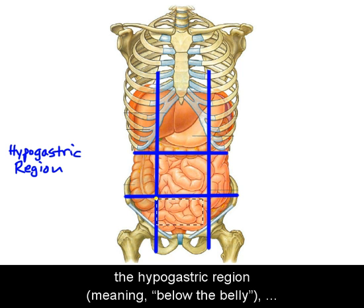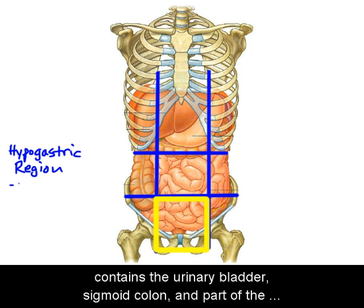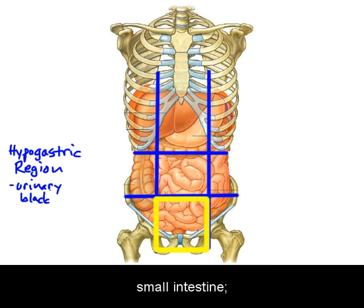The hypogastric region, meaning below the belly, is located at the bottom of the middle column and contains the urinary bladder, the sigmoid colon, and part of the small intestine.